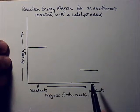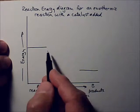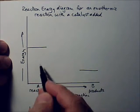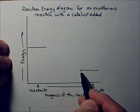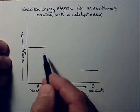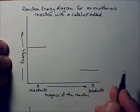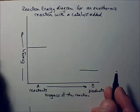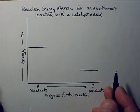The difference between the height of the reactants and the height of the products — that difference — that's the change in enthalpy, the delta H.